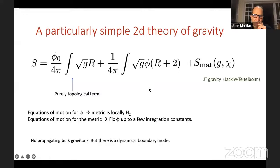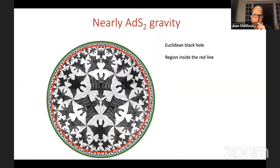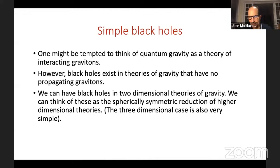There's a question from Manisha: is the Wheeler-DeWitt patch the largest entanglement wedge one can consider in the two-sided AdS black hole, and isn't there a way to cover the whole spacetime? Yes — you can cover the whole spacetime if you do time evolution. If you look at the entanglement wedge at one time you cover a certain region, but to get to other points you have to do some time evolution.